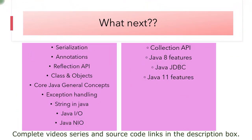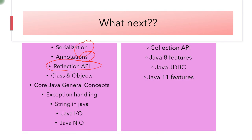And coming to next, what next we are going to cover? Serialization, annotations we have covered. Next, I am going to talk about the reflection API. So all the source code links and video links I have put in the description box below. You go ahead and check out that. I will see you in the next video with the reflection API. Take care. Bye-bye.